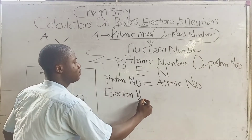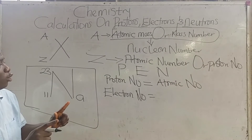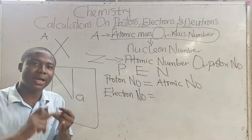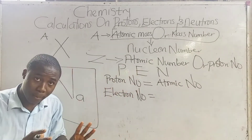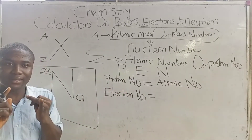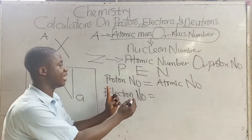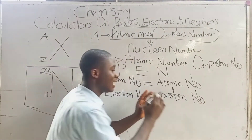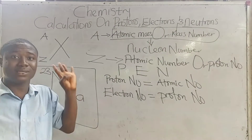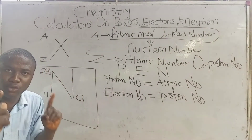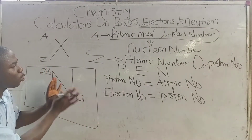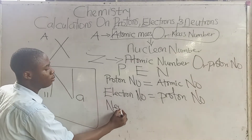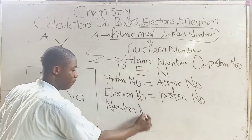It must be noted that for a neutral atom, the electron number is the same as the proton number. The electron number will equal the proton number. So lastly, how do we calculate the neutron number?